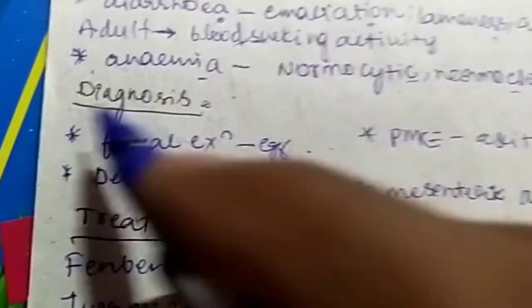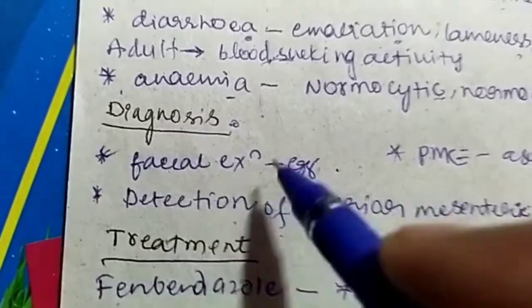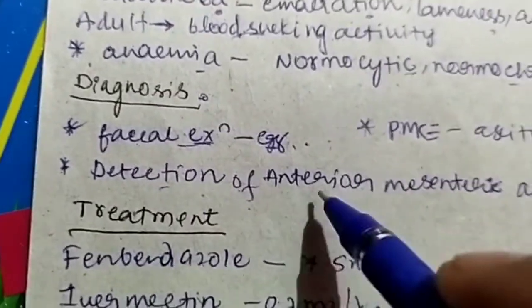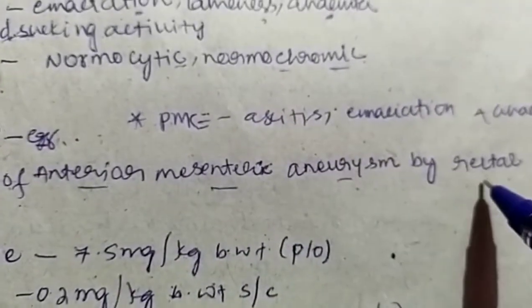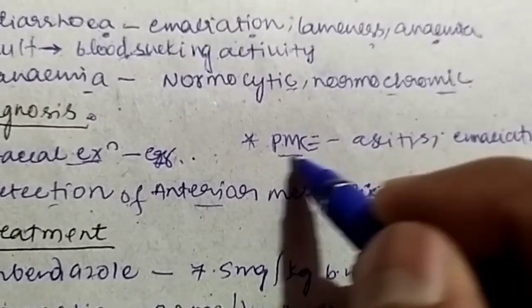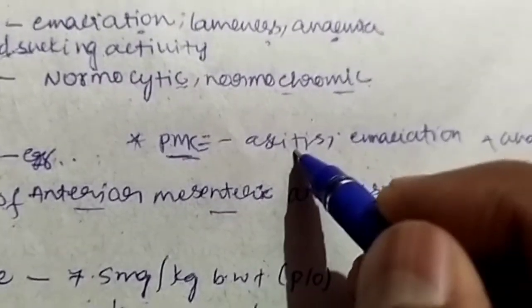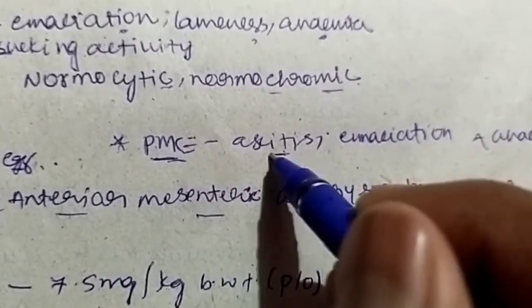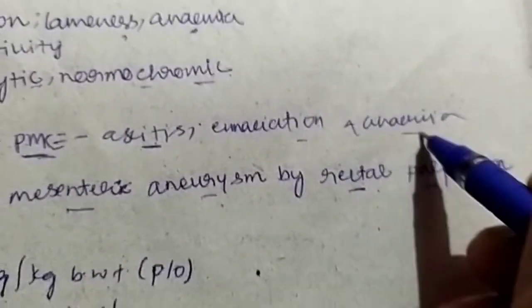Now let us come to diagnosis. Diagnosis is mainly based on fecal examination for egg, detection of anterior mesenteric aneurysm by rectal palpation, and post-mortem examination. In the examination there may be ascites, emaciation, and anemic condition.